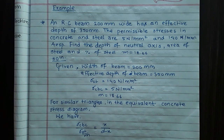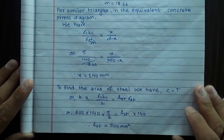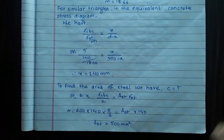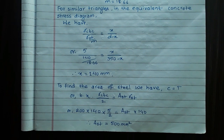Substituting the values: σCBC = 5, σST = 140, M = 18.66. Solving for X, we find the depth of the neutral axis.